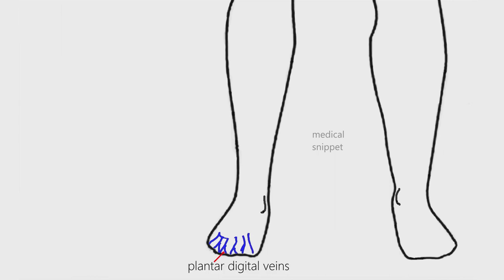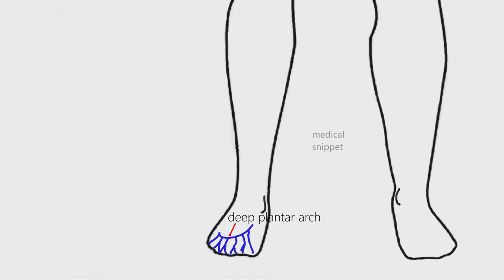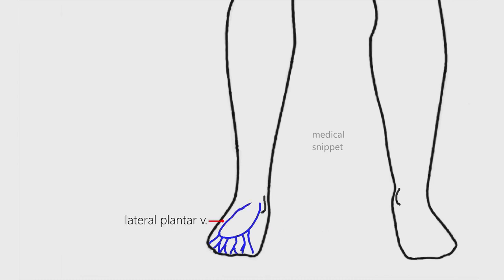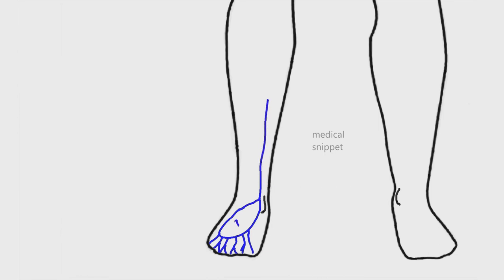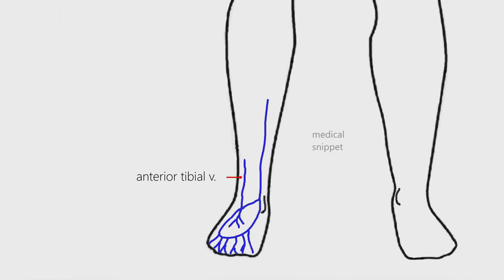In the foot, the plantar digital veins unite into plantar metatarsal veins, which empty into the deep plantar venous arch. The plantar venous arch continues as medial and lateral plantar veins, which continues as the posterior tibial vein. On the dorsum of the foot, the deep veins are formed by the dorsalis pedis vein, which continues as the anterior tibial vein.